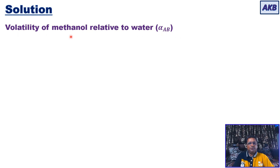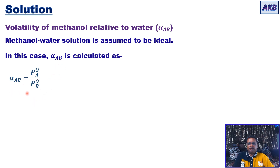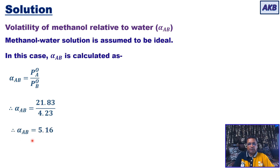For the first task, we need to find alpha_ab — the volatility of methanol relative to water. We assume the methanol-water solution to be ideal, so we can use the equation: alpha_ab = Pa0 divided by Pb0. Pa0 is 21.83 and Pb0 is 4.23, giving us alpha_ab = 5.16. So for the methanol-water system at 30 degrees Celsius, alpha_ab is 5.16.